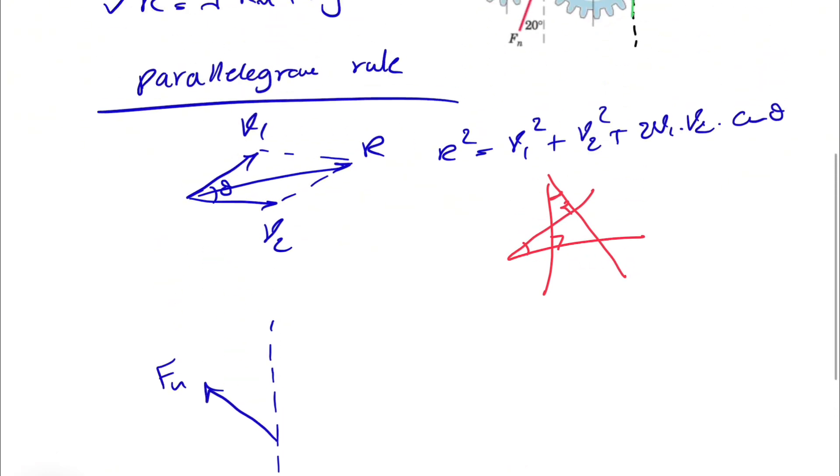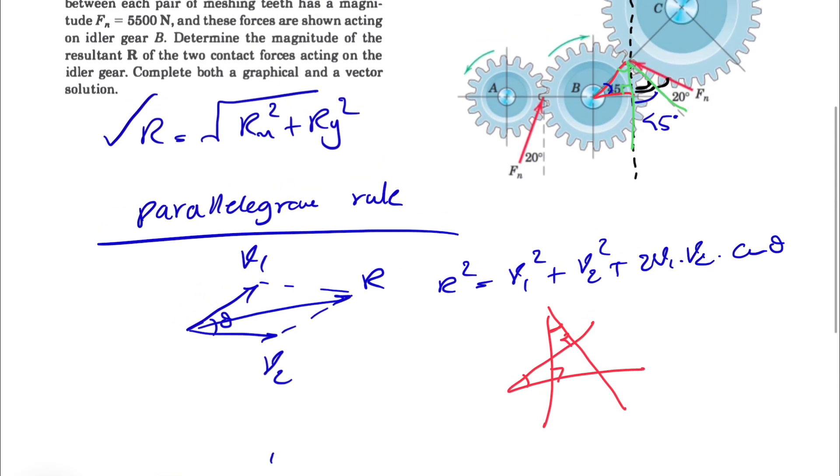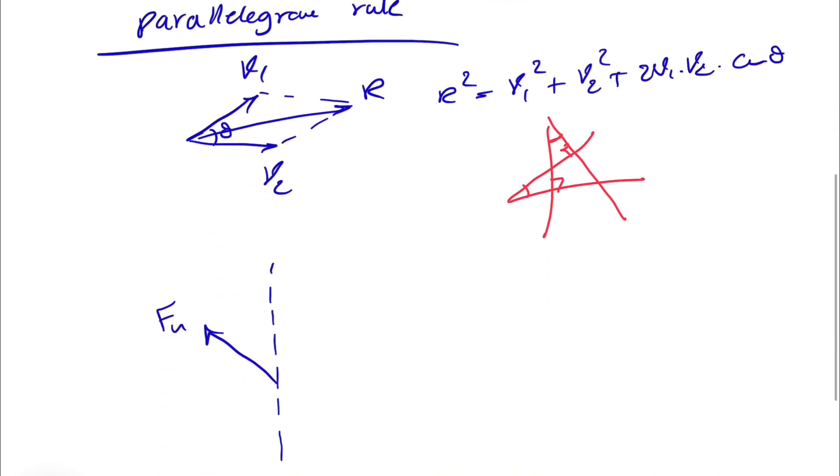What we figure out so far is that the Fn is making... so this will be our Fn. And we know this angle is 20 plus 45 which is 65 degrees and that angle would be same as this angle here 65. So we know here we have 65 degrees.